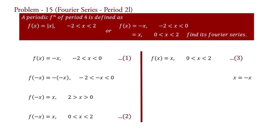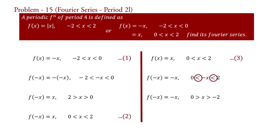Take x equal to −x. Therefore f(−x) = −x for 0 < −x < 2. Writing the interval with signs changed gives 0 > x > −2, and inverting the order: f(−x) = −x for −2 < x < 0 — say equation 4.